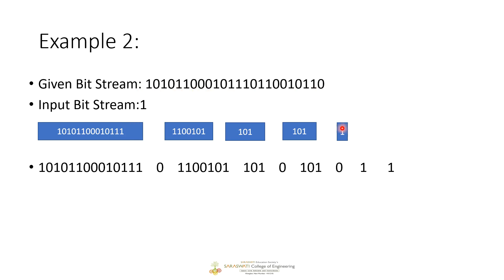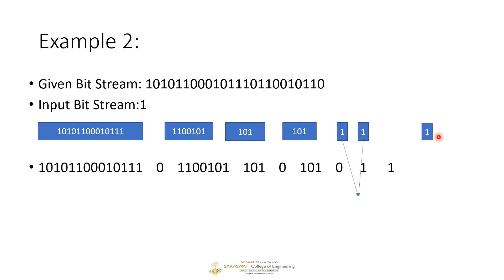Now, what happens if one more input of 1 arrives? The current scenario has one bucket of size 8, one bucket of size 4, two buckets of size 2, and two buckets of size 1. If an incoming bit is 0, we don't consider it. But if a 1 arrives, we place it in a new bucket of size 1. Now we have three buckets of size 1, which is not allowed.